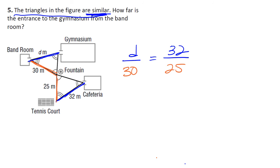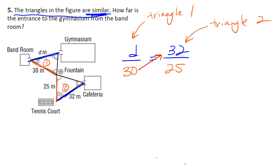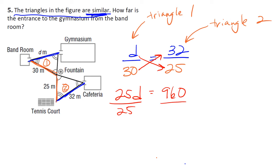We're setting up our proportion. If I label this as triangle one and triangle two — here's triangle one and here's triangle two. All we have to do is cross multiply. We have 25D equal to 32 times 30, giving us 960. Dividing both sides by 25 gives us D equal to 38.4 meters. So the distance from the gymnasium to the band room is 38.4 meters.